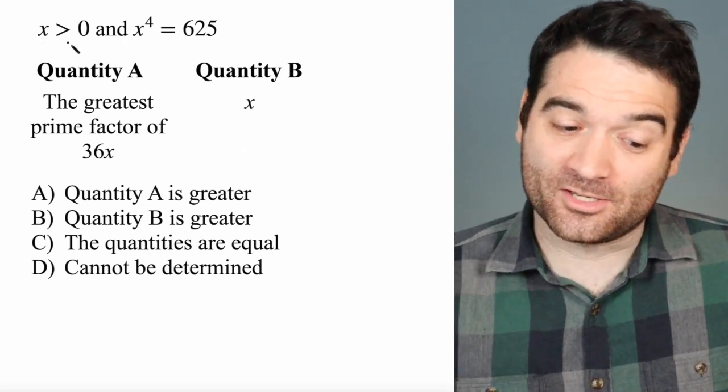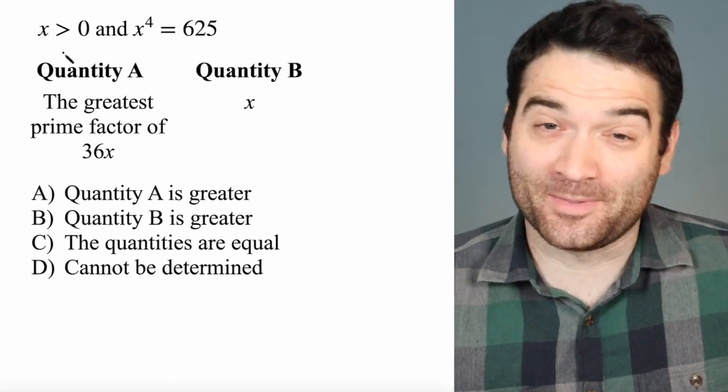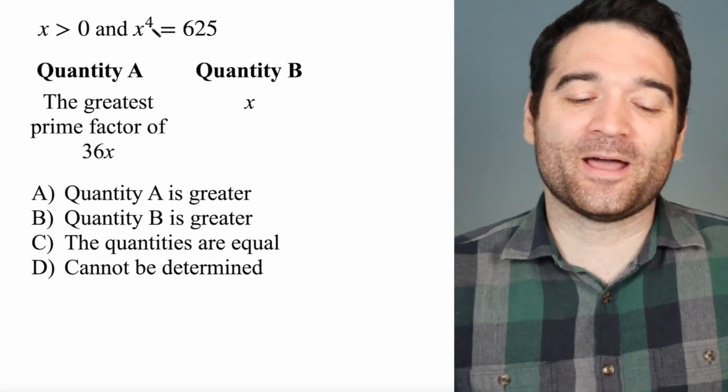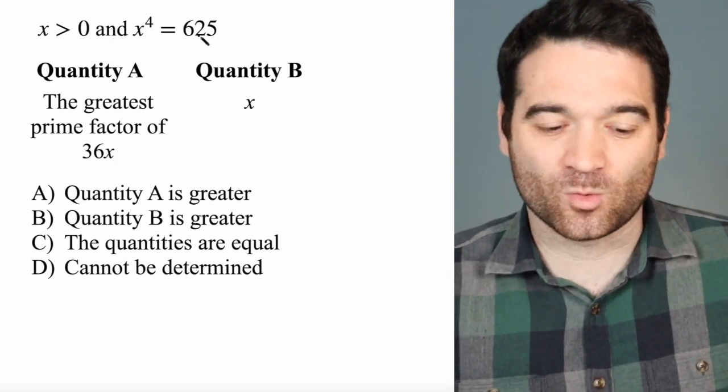We already know that x is greater than 0, so that eliminates about half of the numbers. That's nice for us, right? But let's focus on this part, that x to the power of 4 is equal to 625.